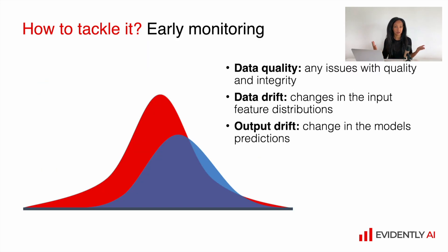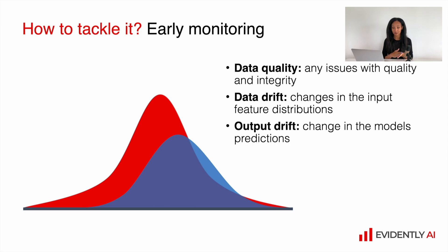How can we tackle such difficulties? Together with standard performance metrics we can adopt some metrics for early monitoring. Those metrics should be based on something which we always have — and these are input data and model output data. Having those data we can calculate data quality, so we will be able to cover for issues with quality and integrity. We can calculate data drift to track changes in the input feature distributions, and finally output drift to track changes in the model predictions.